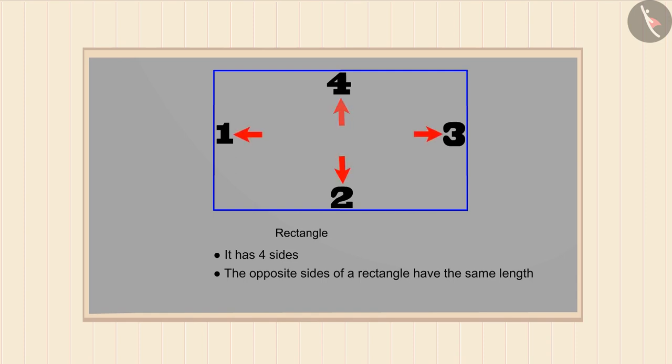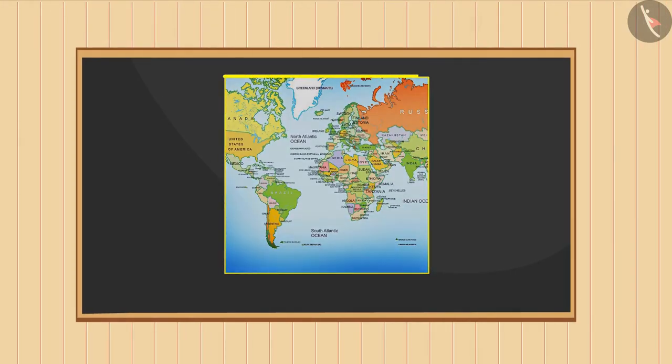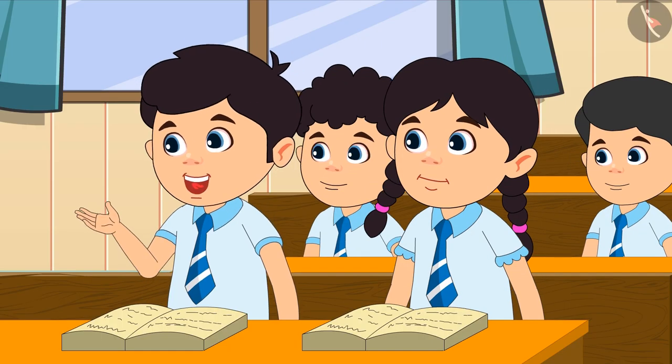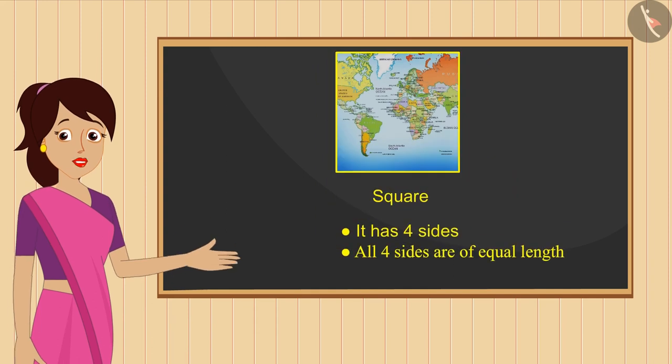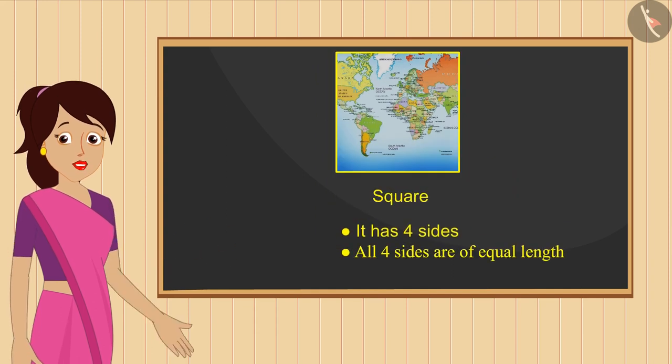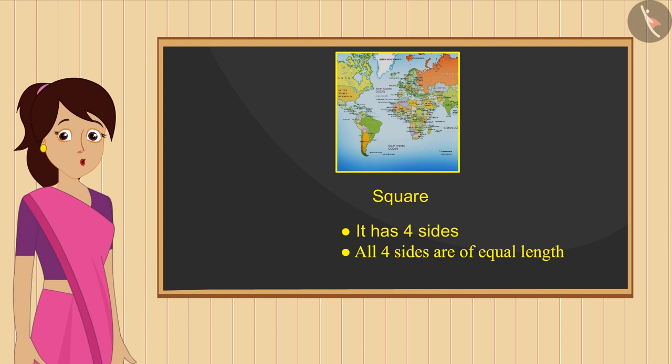Now tell me which shape shall we get by tracing this map? This is a square. Very good Ravi. A square is a shape that has four sides and all four sides are of same length.